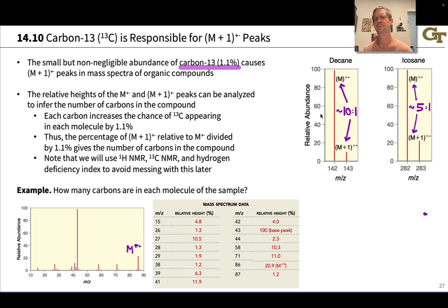This actually suggests a method based on this isotopic abundance to determine the number of carbons in the sample by looking at the ratio of the height of the M peak to the height of the M+1 peak.